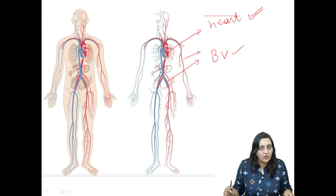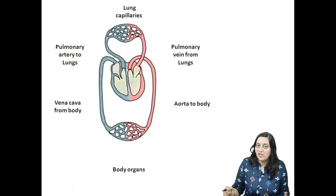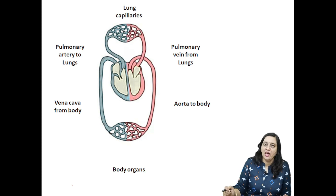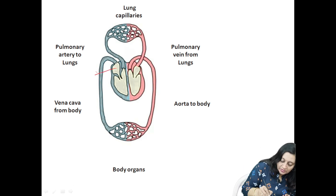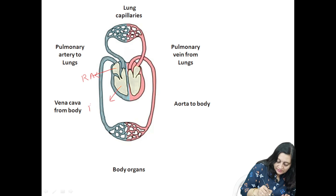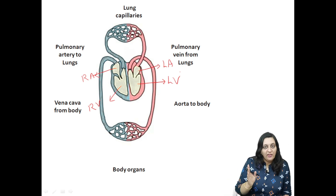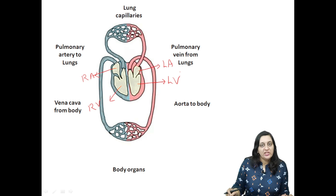These are the three components of the circulatory system. Now, in our next slide, we will understand how these three components coordinate with each other. As we all know, our heart is four-chambered, that is, it is made up of four chambers. The upper ones are called atria while the lower ones are called ventricles. In this diagram, you can see the right atrium, right ventricle, left atrium, and left ventricle. What we must remember is that the left part of the circulatory system carries oxygenated blood while the right part carries deoxygenated blood.